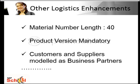There are several other key enhancements in Simple Logistics. The material number length has now increased to 40 characters from the current 18. The product version is now mandatory. And customers and suppliers are now modeled as Business Partner — BP is the single point of entry to create, edit, and display master data for business partners, customers, and vendors.